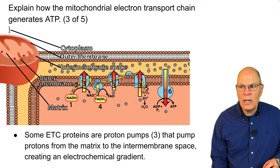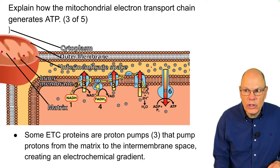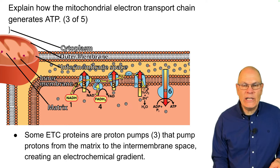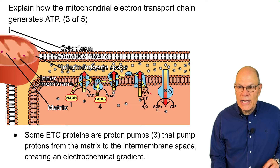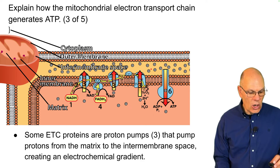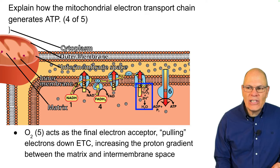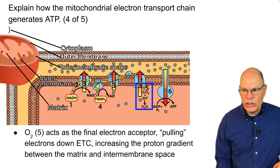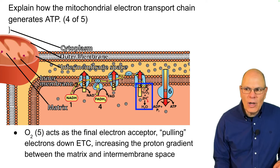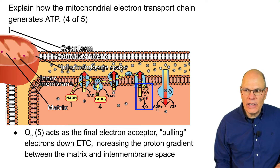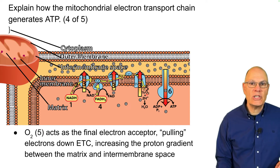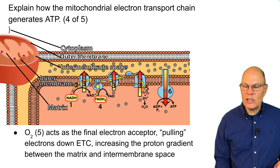There are more protons and more positive charges in the intermembrane space, and fewer on the matrix side. It's also a pH gradient because the pH is much lower in the intermembrane space than in the matrix — all those protons are trapped. Oxygen acts as the final electron acceptor. It is so electronegative that it pulls electrons down the electron transport chain, and as it does, it absorbs electrons and protons available in the matrix, which increases the gradient. This is why you need oxygen to do aerobic respiration: it is the final electron acceptor in the electron transport chain.